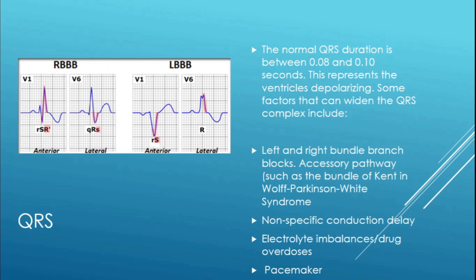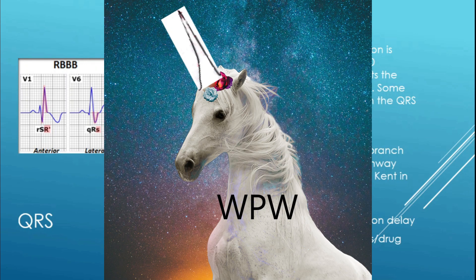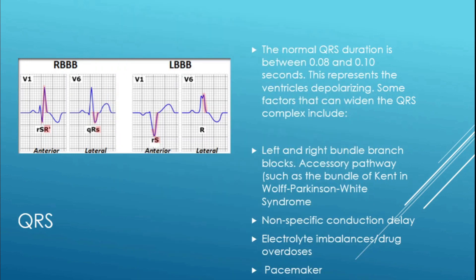The normal QRS duration is between 0.08 and 0.10 seconds, representing ventricular depolarization. Factors that can widen the QRS include left and right bundle branch blocks, accessory pathways from Wolff-Parkinson-White with the bundle of Kent, nonspecific conduction delay, electrolyte imbalances, drug overdoses such as TCA overdoses, and pacemakers.